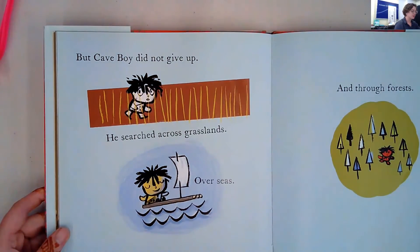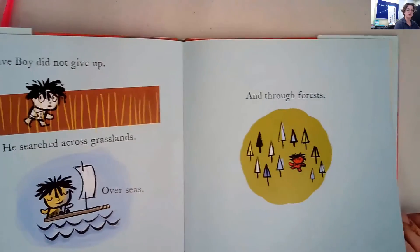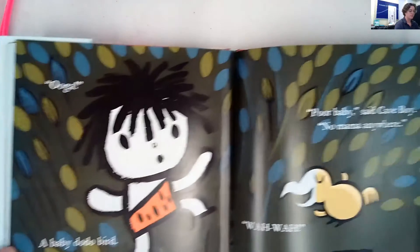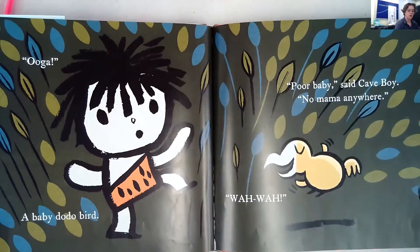But cave boy did not give up. He searched across grasslands, overseas, and through forests until he found a baby dodo bird. 'Poor baby,' said cave boy. 'No mama anywhere.' 'Wah, wah.'